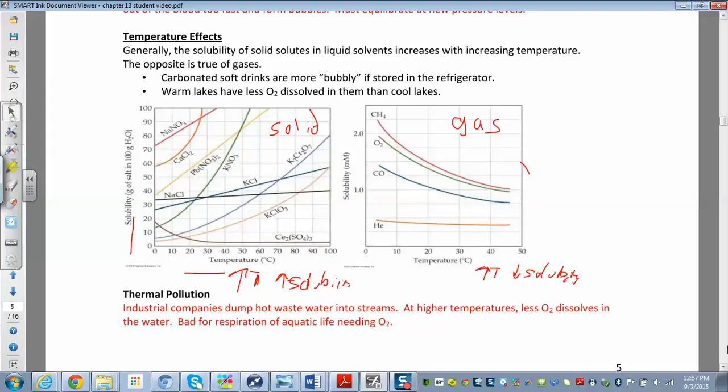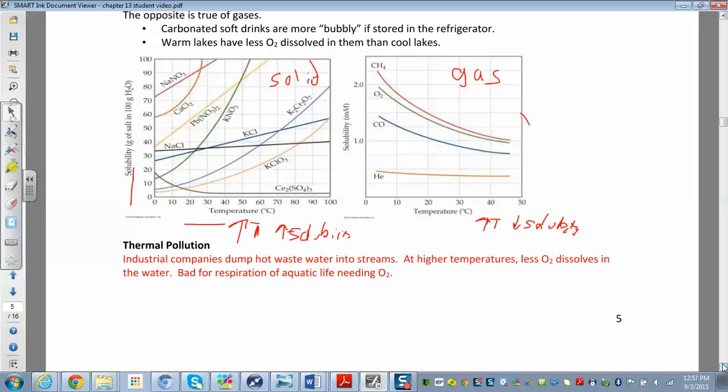A real-world application of that is something called thermal pollution. That's when you have companies that maybe have reactors or something they want to cool down. The way they cool them down is they run cold water around whatever they want to cool down. The heat gets transferred to the cold water. The waste should be clean - it's just water. But the problem is that it's hot water, and they dump hot water into rivers, streams, and lakes.